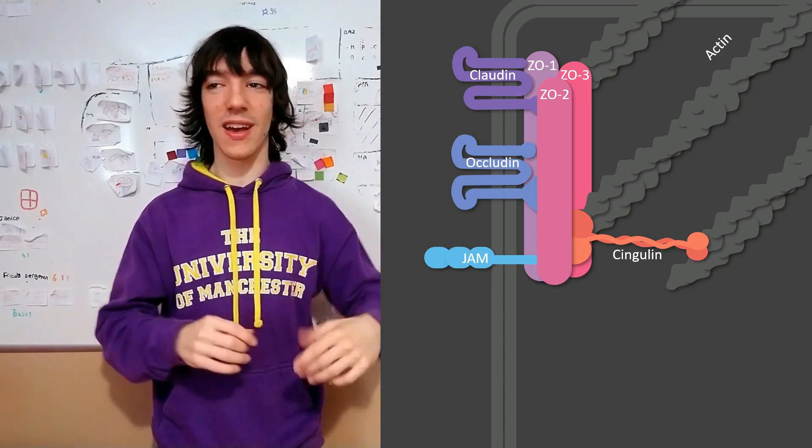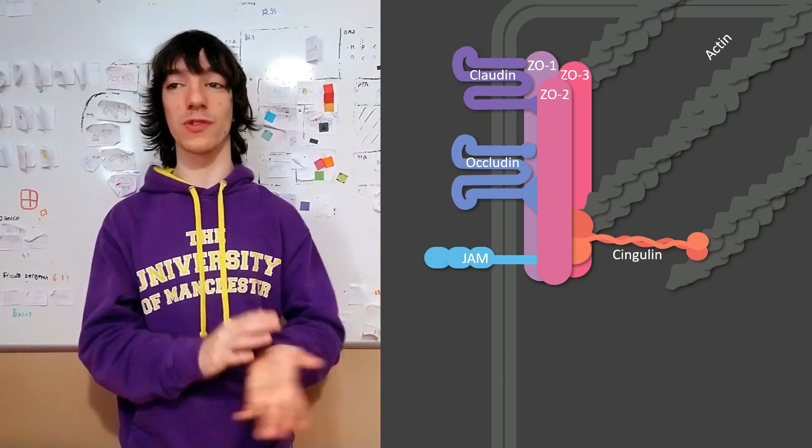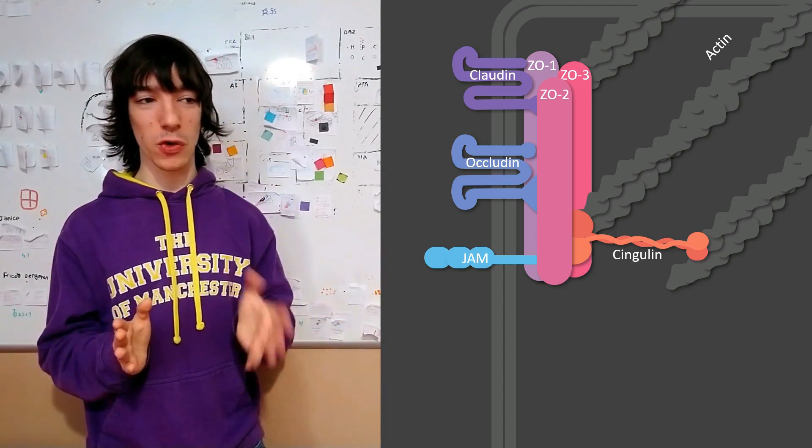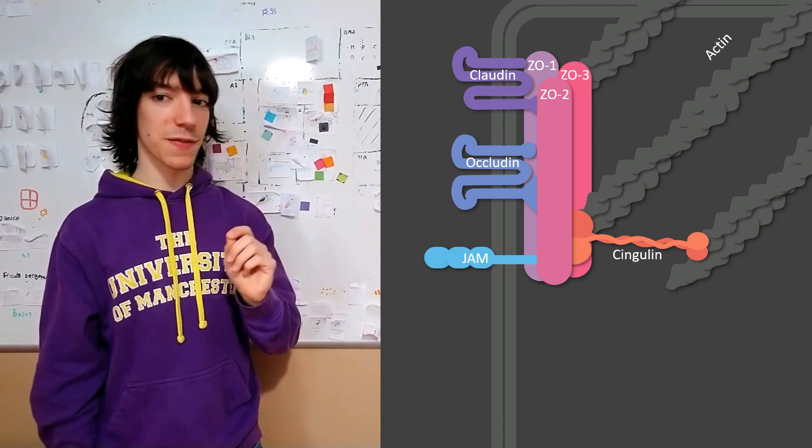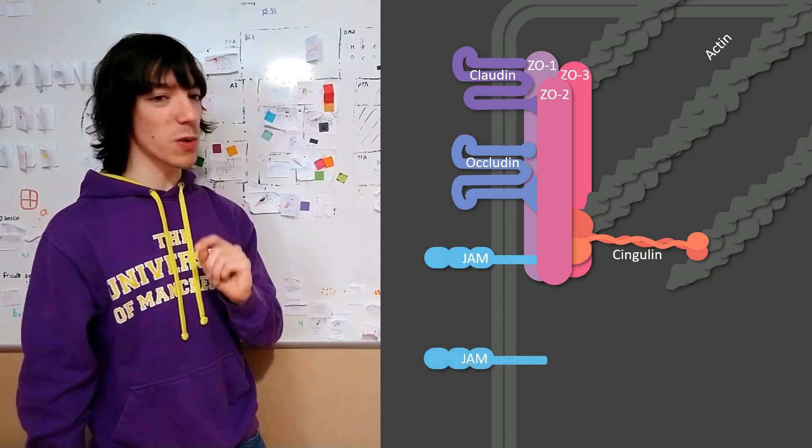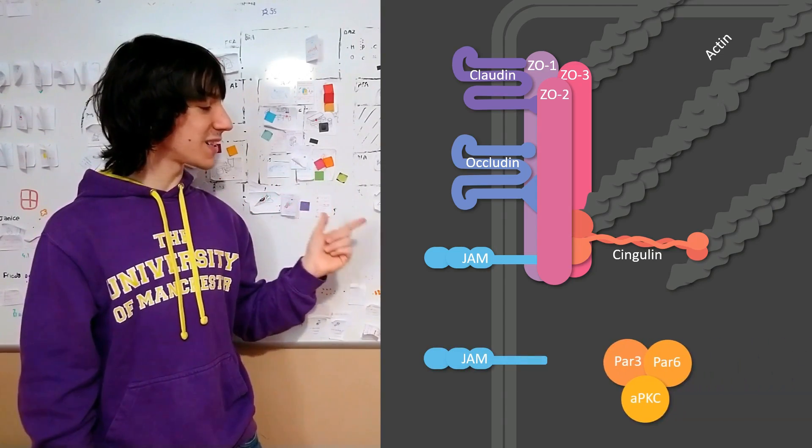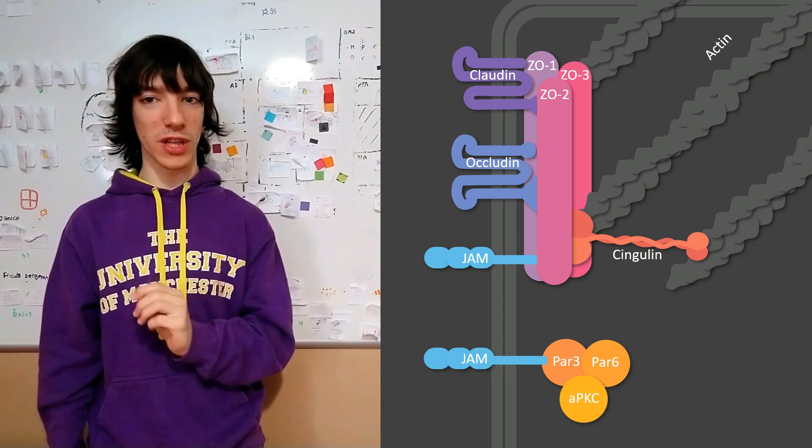You're probably going to come across it in future classes, in other lectures, maybe in developmental biology or something like that. It's the fact that JAM proteins can also recruit the PAR3-PAR6-aPKC protein complex.